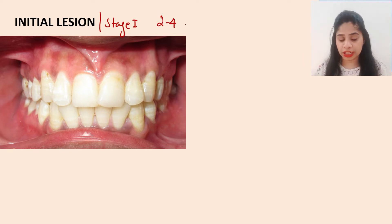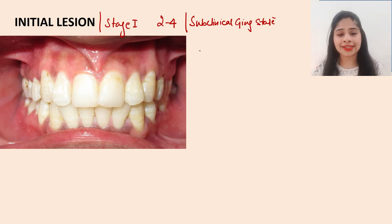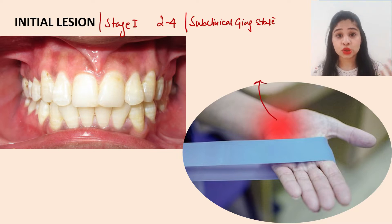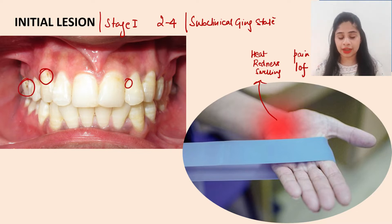Stage 1 is also called subclinical gingivitis. It is termed subclinical because the cardinal signs of inflammation — heat, redness, swelling, pain, and loss of function — are not really apparent in the gingiva. In the clinical picture, the gingiva looks normal, though you can observe some specks of plaque and calculus in certain areas.